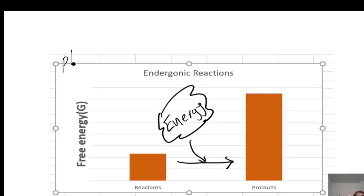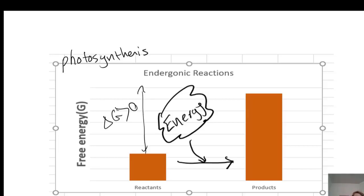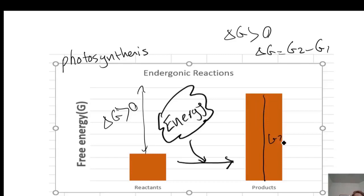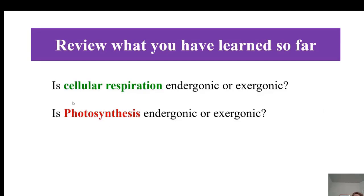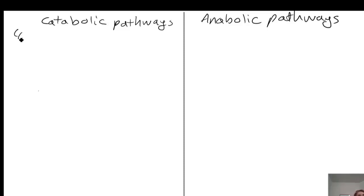In an endergonic reaction such as photosynthesis, ΔG is positive. ΔG = G₂ − G₁, and G₂ is greater than G₁, so ΔG is positive. The reaction is non-spontaneous; you need to enter energy into the system — which is why plants need sunlight to perform photosynthesis. To review: cellular respiration is an exergonic reaction that happens spontaneously in our body, and photosynthesis is an example of an endergonic reaction.